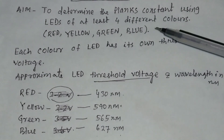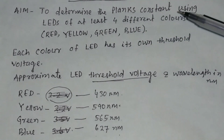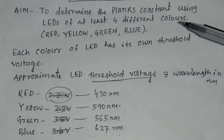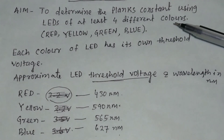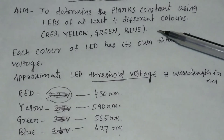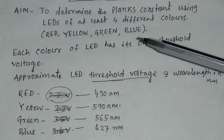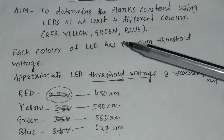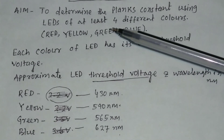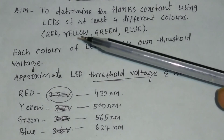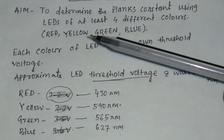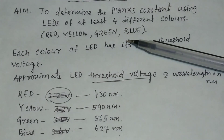In this experiment, we will determine Planck's constant using four LEDs. The LEDs we have used here are red, yellow, green, and blue.